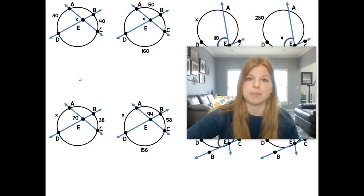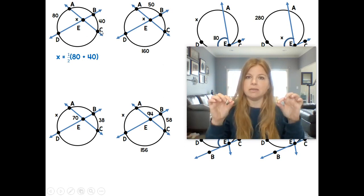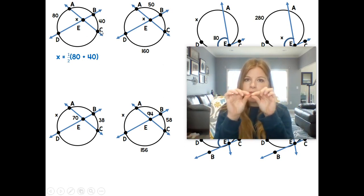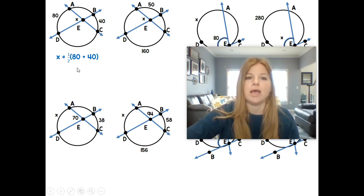So this just follows our exact pattern of the formula. X is equal to one half of 80 plus 40. Kind of like it makes a bow tie looking. So when you're finding that angle within the bow tie, you simply add up the two arcs and then cut it in half, and that angle would simply be 60 degrees.